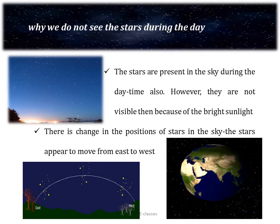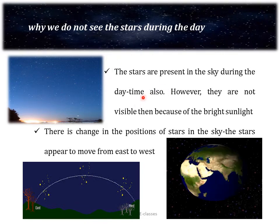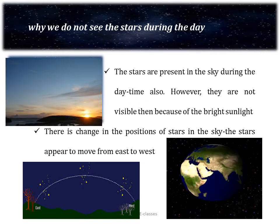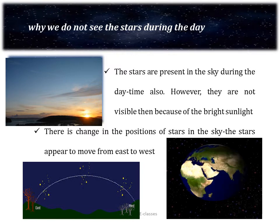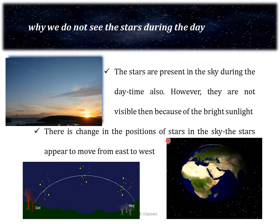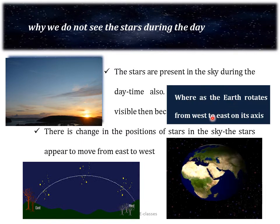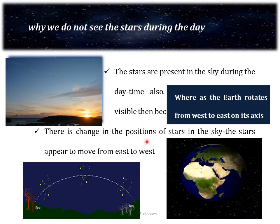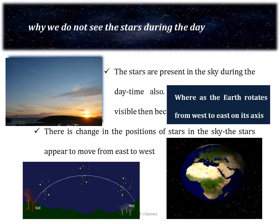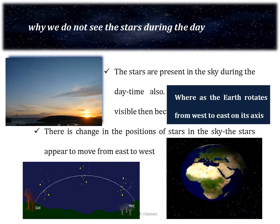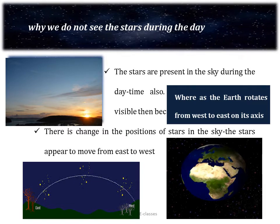We are only able to see the stars during the night. Why are we not able to see them during the day? In fact, the stars are present in the sky during the daytime also, but they are not visible because of the bright sunlight. If we observe a prominent star or group of stars in the sky for about 2 hours or more, we find that there is a change in the position of the stars — they appear to move from east to west. This is because the earth rotates from west to east on its axis. Just as when moving in a train, nearby trees and buildings appear to move backward, similarly the stars appear to move from east to west.